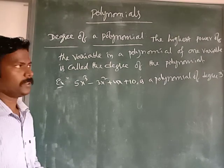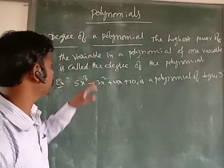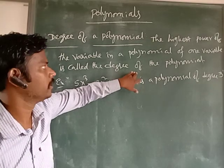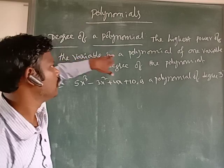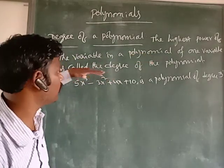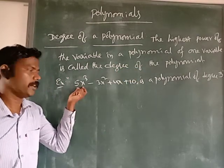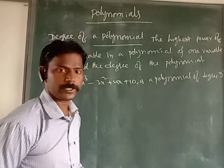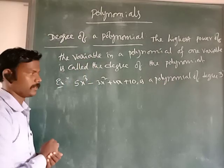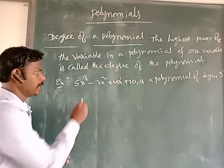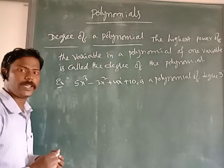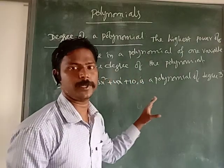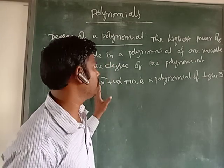Next, we see the degree of a polynomial. The highest power of the variable in a polynomial of one variable is called the degree of the polynomial. For example: 5x³ − 3x² + 4x + 10 is a polynomial. Here we have x³, x², and x¹. The highest power among these is 3, so the degree of this polynomial is 3.